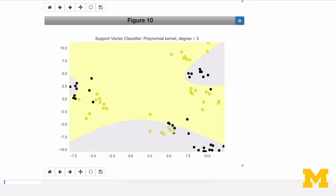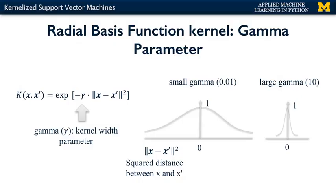The polynomial kernel takes an additional parameter, degree, that controls the model complexity and the computational cost of this transformation. You may have noticed that the RBF kernel has a parameter, gamma. Gamma controls how far the influence of a single training example reaches, which in turn affects how tightly the decision boundaries end up surrounding points in the input space. Small gamma means a larger similarity radius, so that points farther apart are considered similar, which results in more points being grouped together and smoother decision boundaries. On the other hand, for larger values of gamma, the kernel value decays more quickly and points have to be very close to be considered similar, resulting in more complex, tightly constrained decision boundaries.